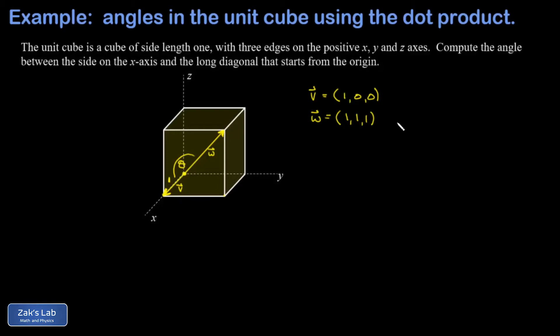The key to getting the angle between these two vectors is using the dot product. The dot product equals the product of their magnitudes multiplied by the cosine of the angle between them.